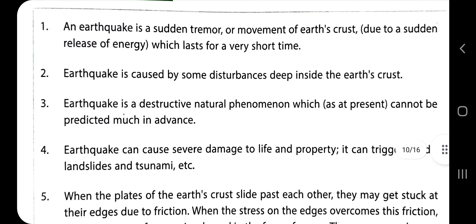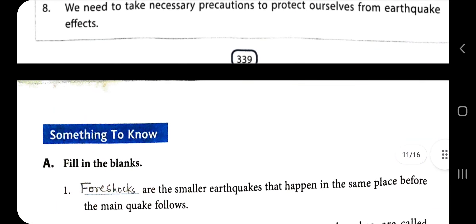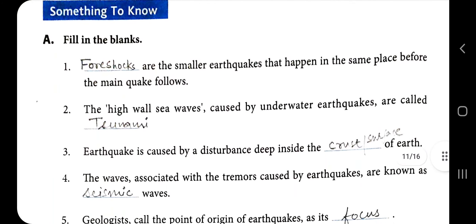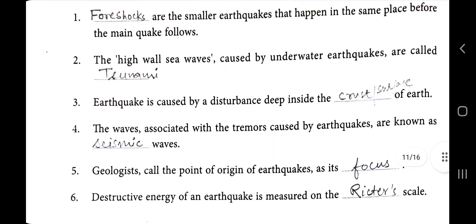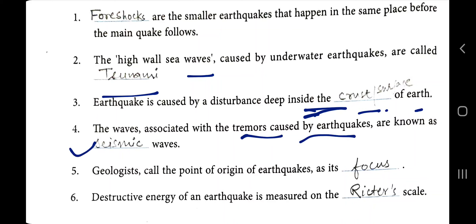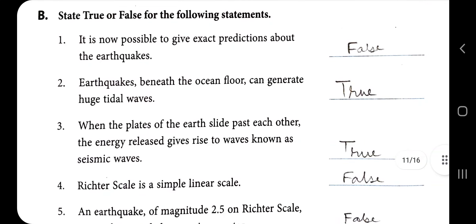This chapter is now complete. Keywords are very important — if you learn these keywords, eighty percent of your problems are solved. Key facts: foreshocks are smaller earthquakes that happen before the main quake. High-wall sea waves caused by underwater earthquakes are called tsunamis. Earthquakes are caused by disturbances deep inside the crust. Waves associated with tremors are seismic waves. The point of origin is the focus. Destructive energy is measured on the Richter scale.